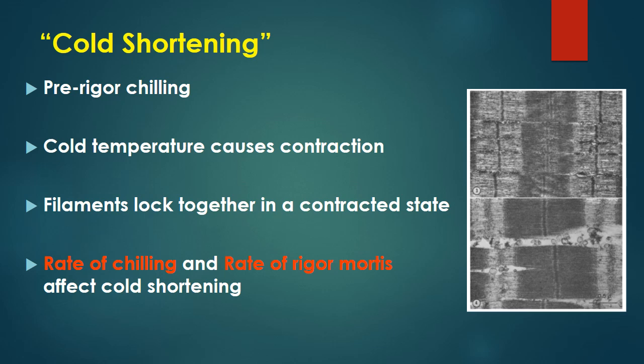Cold shortening is caused by contraction due to early chilling below 15 to 16 degrees Celsius, where the filaments lock together in a contracted state. This depends on the rate of chilling and the rate of rigor mortis. If we must chill early, a special practice called electrical stimulation can be used. Electrical stimulation can quickly overcome rigor mortis, allowing for early chilling without causing cold shortening — it is a solution to avoid cold shortening when early chilling is necessary.